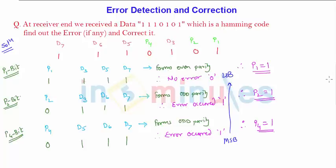And therefore the error code is equal to MSB to LSB. That is nothing but 1, 1, 0. And this corresponds to 6 in the decimal format.